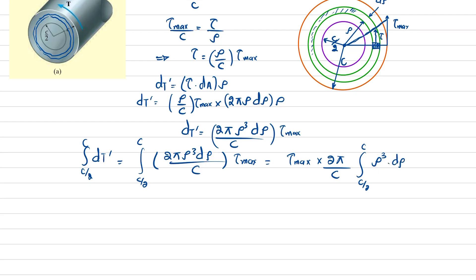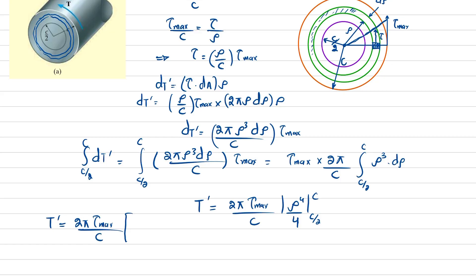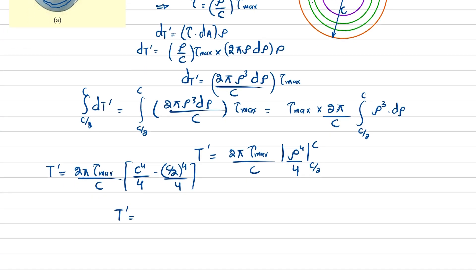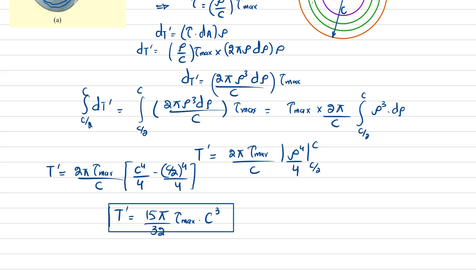Integrating ρ³ gives ρ⁴/4. Evaluating from c/2 to c: T' = (2π·τ_max / c) · [c⁴/4 − (c/2)⁴/4]. Solving this, the torque resisted by the outer core comes out to T' = (15π/32)·τ_max·c³. This is equation 1.